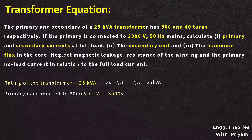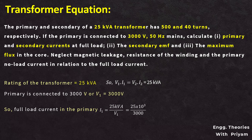We can determine the full load current in the primary I1 from the equation V1·I1 = 25 kVA, so I1 equals 25 × 10³ divided by V1 of 3000 volt, which results in 8.33 ampere. We can also apply the same formula for the full load current in the secondary winding, but since we don't have the induced voltage in the secondary, we need to apply another process.